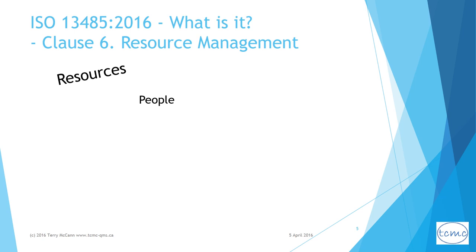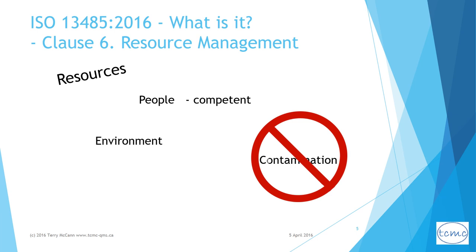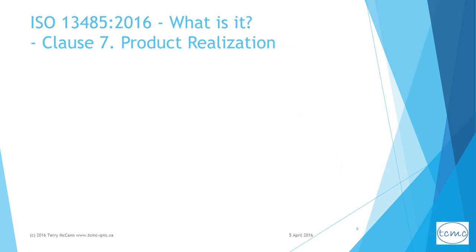Clause 6 sets out the requirement to provide the resources necessary for an effective QMS. You have to identify the people and jobs affecting product quality and ensure that these people are competent. You have to provide the infrastructure and work environment needed to ensure medical device safety and performance, such as health, cleanliness, and clothing requirements where these could affect product quality. Where applicable, you have to establish arrangements to prevent contamination if you have products needing this kind of control.